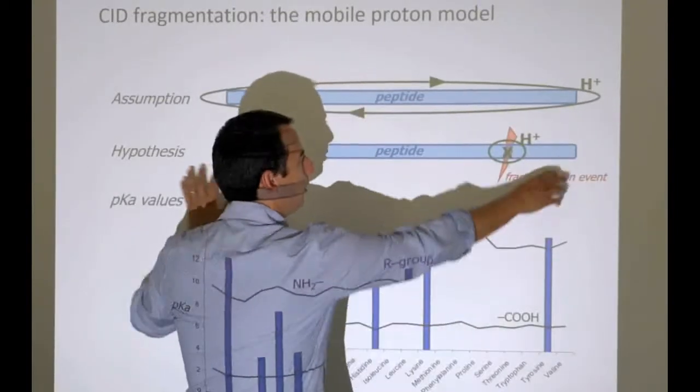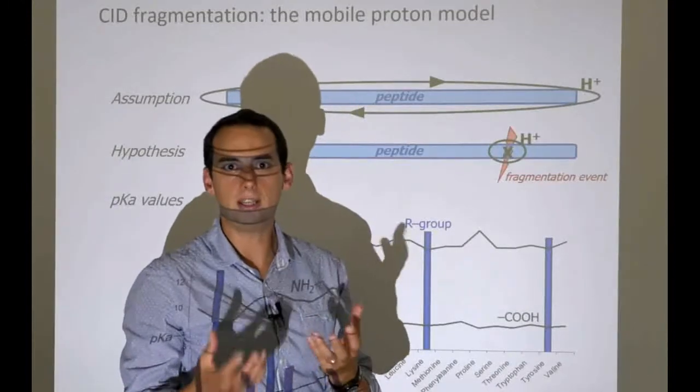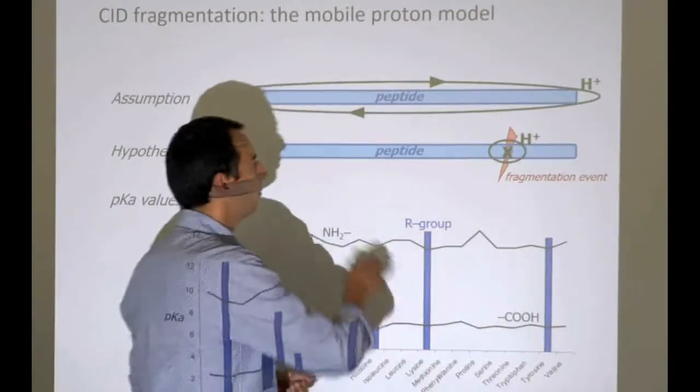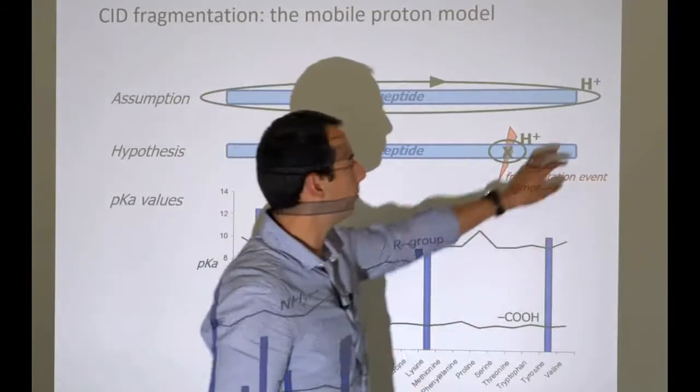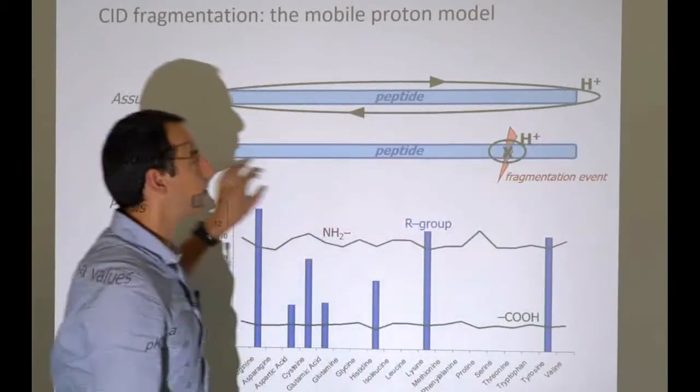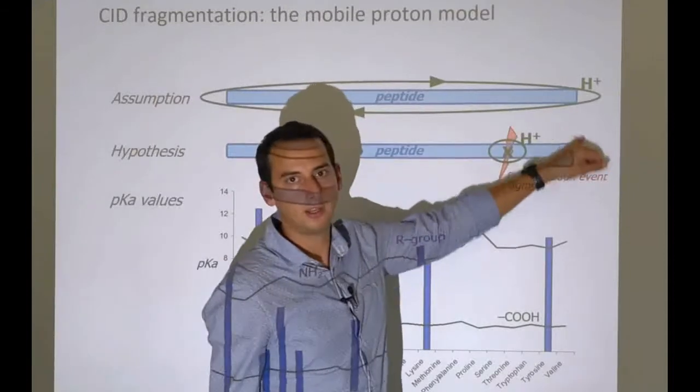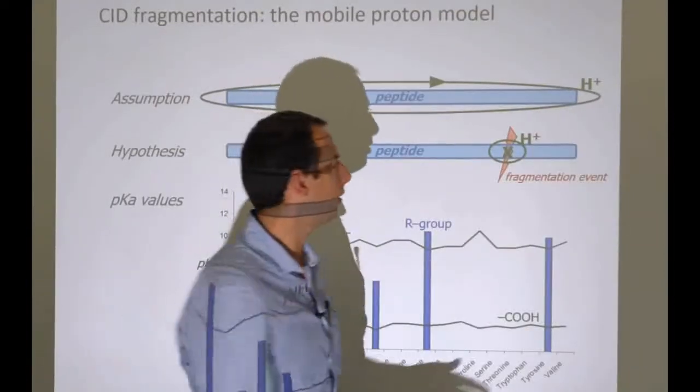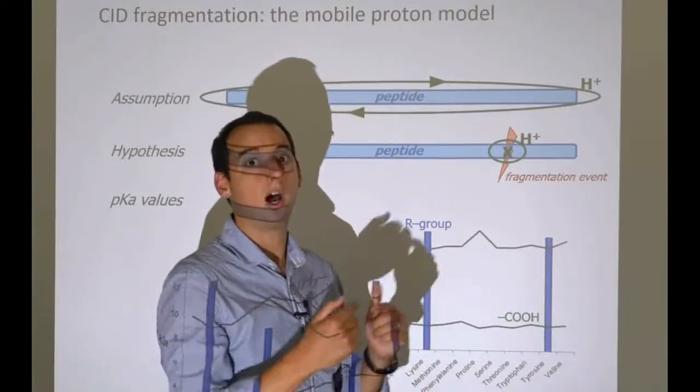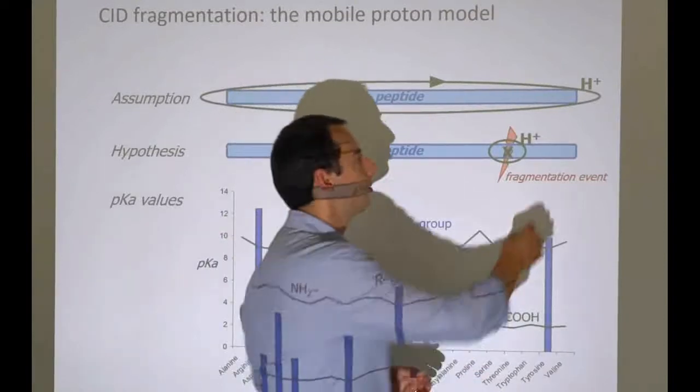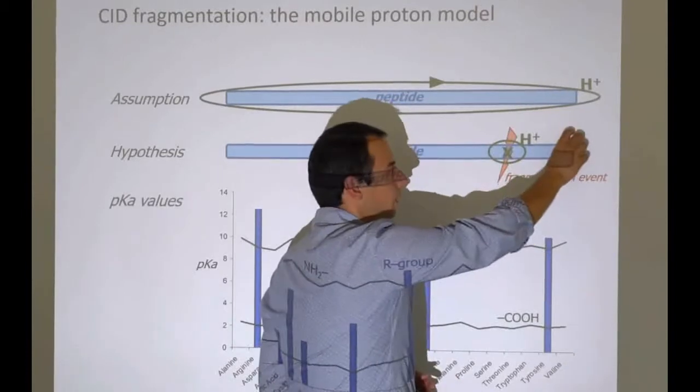The second most attractive position for a proton is the lysine side chain. But lysine is very close in attractiveness to a proline N-terminus. So any peptide that starts on proline will have a really nice location for a proton at the N-terminus. If that peptide ends on lysine, there will also be an equally attractive position there. Imagine there are two positions where a proton can be held reasonably easily and roughly equally stably.